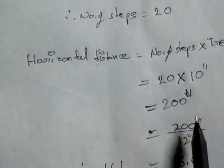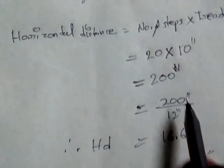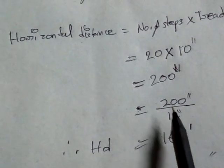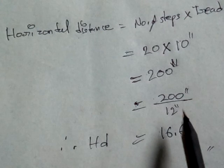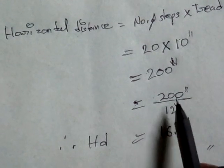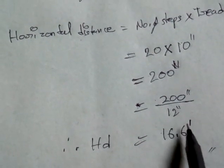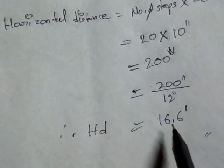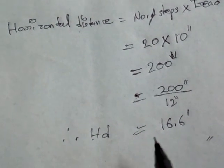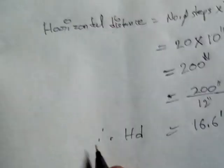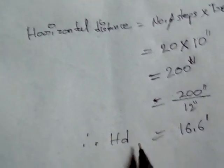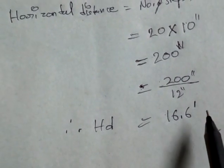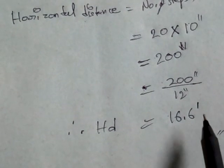200 inches is converted to feet. 200 inches divided by 12 inches equals 16.6 feet. Therefore, Horizontal Distance is 16.6 feet.